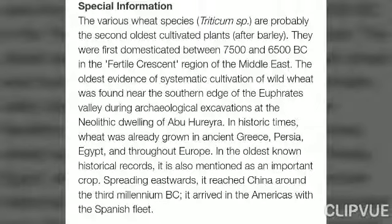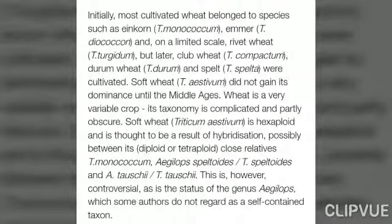Various wheat species were probably first domesticated between 7500 BC and 6500 BC in the Fertile Crescent region of the Middle East. The oldest evidence of systematic cultivation of wild wheat was found near the southern edge of the Euphrates.